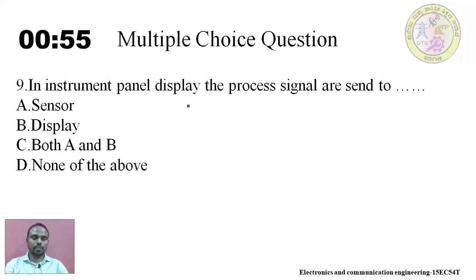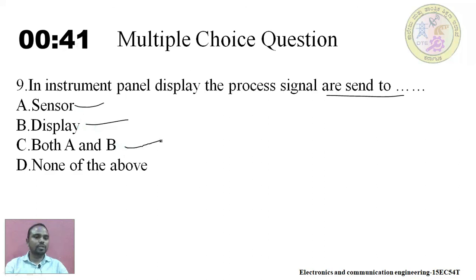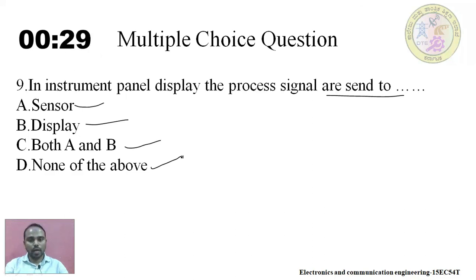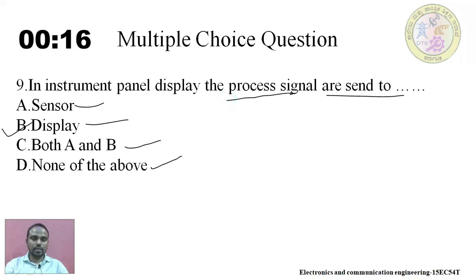Question nine: in instrument panel display, the processed signals are sent to dash. Options: sensor, display, both sensor and display, or none of the above. The answer is display — once we process the signal from the input, we send it to the display for display purpose.